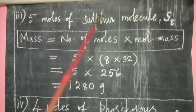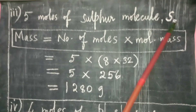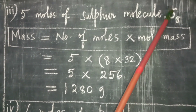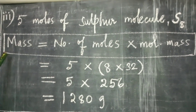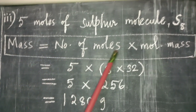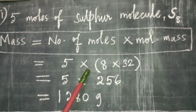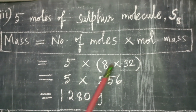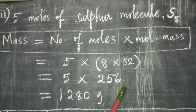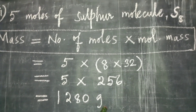Third: 5 moles of sulfur molecule, S₈. The atomic mass of sulfur is 32, so 8×32 = 256. Mass = number of moles × molecular mass = 5 × 256 = 1280 grams.